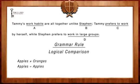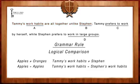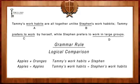In terms of this question, the first half of the sentence states that Tammy's work habits are altogether unlike Steven. This fragment is incorrect because we cannot compare Tammy's work habits to Steven the person — we must compare her work habits to his work habits. Hence, the sentence should read: 'Tammy's work habits are altogether unlike Steven's work habits.'